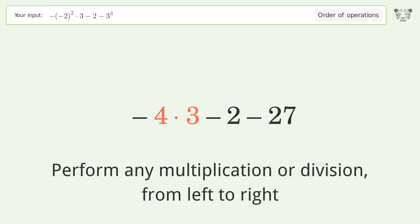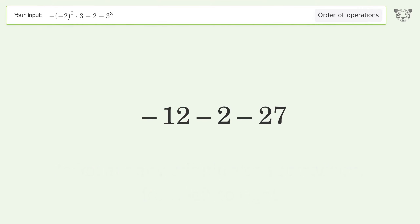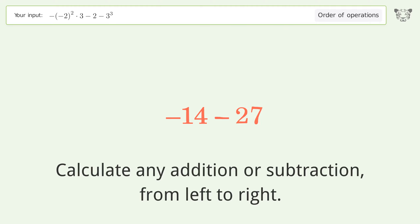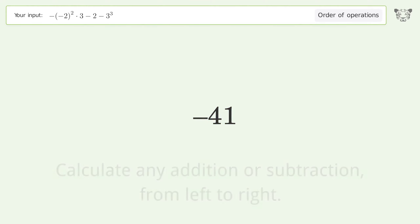4 times 3 equals 12. Then calculate any addition or subtraction from left to right: negative 12 minus 2 equals negative 14, and negative 14 minus 27 equals negative 41. So the final result is negative 41.